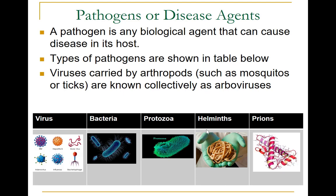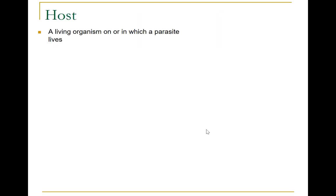Prions are a form of infectious protein believed to be the cause of several neurodegenerative diseases, such as Creutzfeldt-Jakob disease, a severe brain disease. Like viruses, prions are not considered living. They multiply by inducing host proteins to refold into an abnormal shape, which accumulates in and destroys neurons.